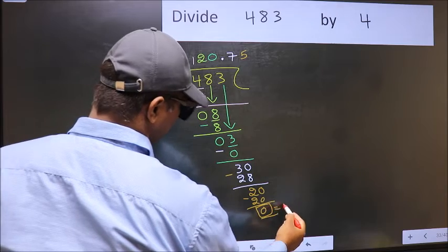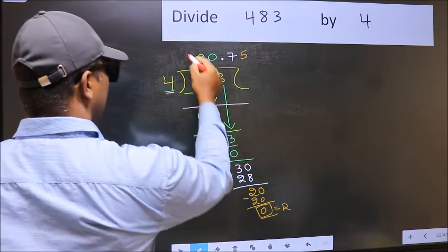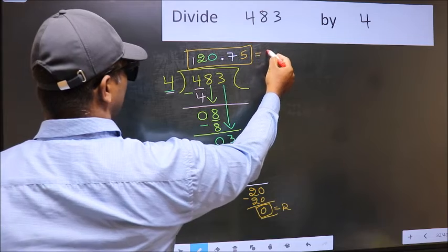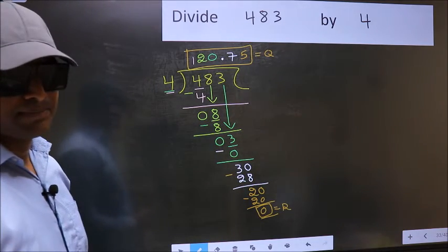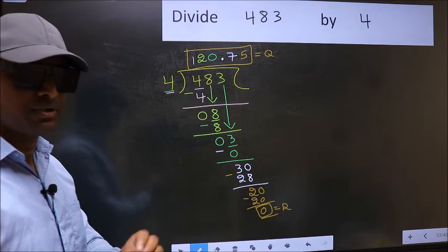So this is our remainder and this is our quotient. Did you understand where the mistake happens? You should not do that mistake.